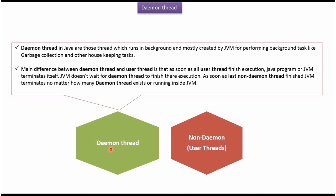The main difference between daemon thread and user thread is: as soon as the user thread finishes execution, the JVM terminates. JVM does not wait for daemon threads to finish their execution. As soon as the last user thread finishes execution, JVM terminates — no matter how many daemon threads are running inside the JVM.